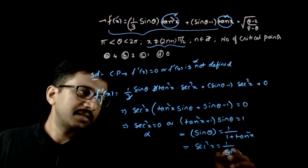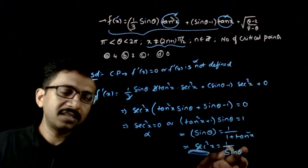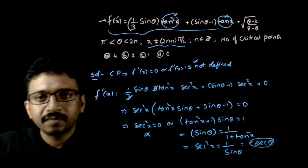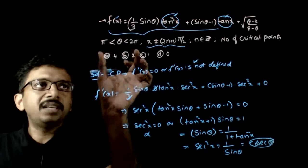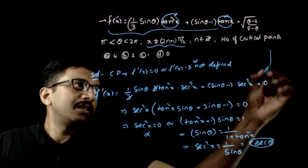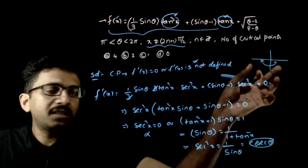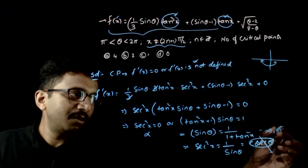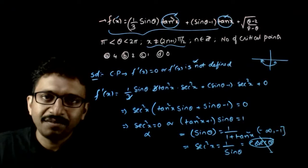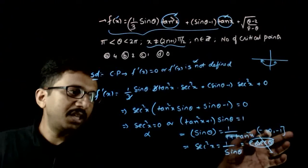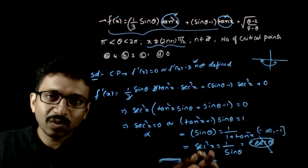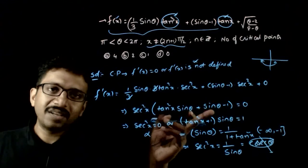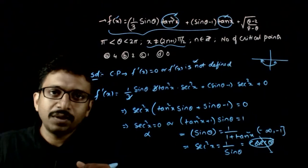So whenever sec²x equals cosec θ, the differentiation will be zero. However, theta lies between π and 2π, meaning theta is in either the third or fourth quadrant. In both quadrants, cosec θ is negative — it ranges from −∞ to −1. So the right-hand side is negative, but sec²x is always positive. Since LHS is positive and RHS is negative, these two can never be equal, so the differentiation is never equal to 0.